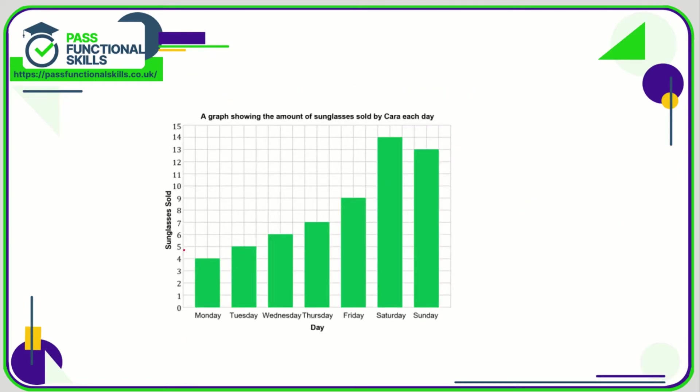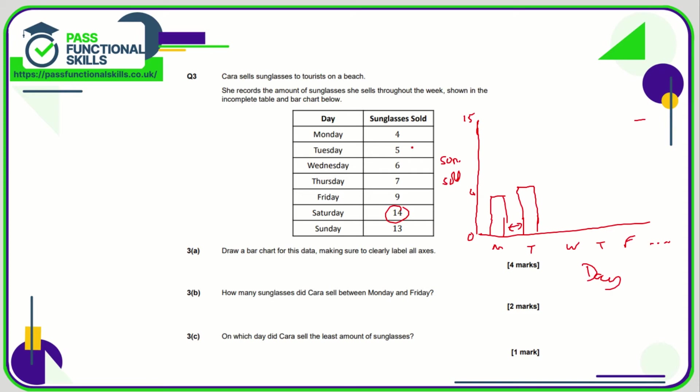So here we have it. Axis clearly labeled here and on the horizontal axis. The scale goes from zero to fifteen, all bars are equal widths with a gap in between to make it look nice and pretty. We can see Saturday is the tallest as expected. These numbers—four, five, six, seven, nine, fourteen, and thirteen—correspond with the numbers in the table.